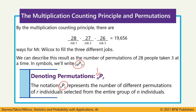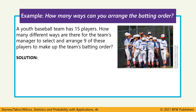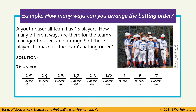A youth baseball team has 15 players. How many different ways can the manager select and arrange nine of these 15 players to make up the batting order? For the first spot there are 15 options, then 14, 13, all the way down until we fill nine spots, stopping at seven. That gives 1,816,214,400 possible batting orders. We write this as 15P9, since there are 15 players in the group and we're choosing nine of them.